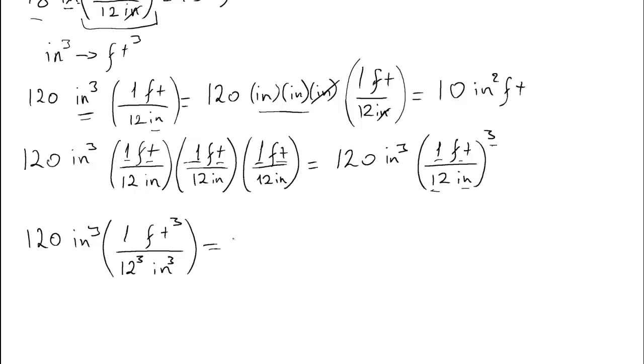And then, basically, it just becomes a task for the calculator. We have 120 divided by 12 cubed, our inches cancel completely, and we are left with cubic feet in terms of an actual decimal number. That turns into 0.0694 cubic feet, which is of course very different from 10.